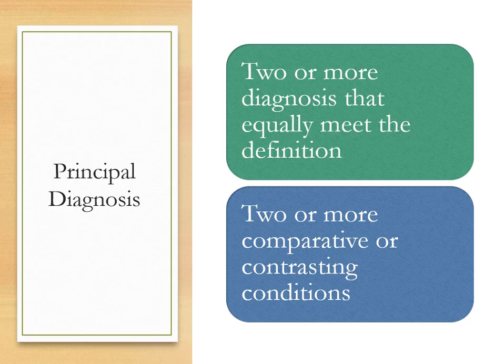Next: situations where two or more diagnoses equally meet the definition for principal. Notice how that differs from the previous guideline, which was about interrelated conditions. Here we're talking about two or more diagnoses that equally meet the definition — an unusual instance. The guidelines state that either diagnosis may be sequenced first, provided the alphabetical index, tabular list, or other guidelines don't indicate otherwise.